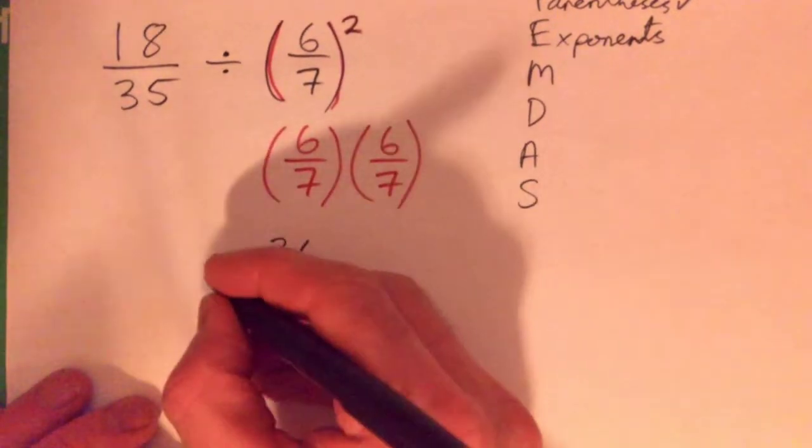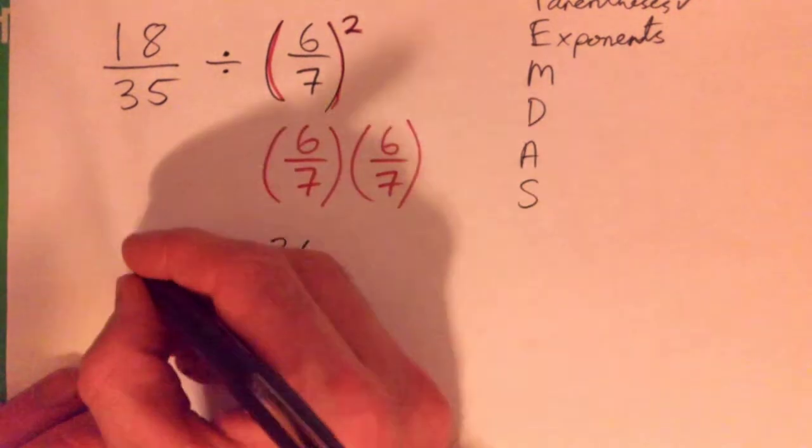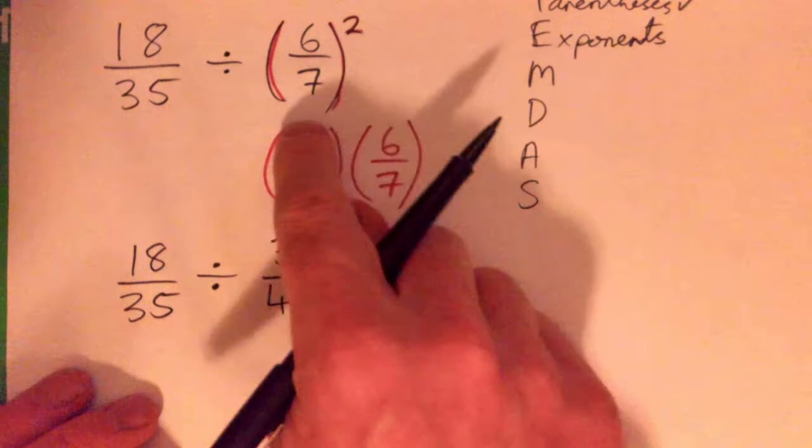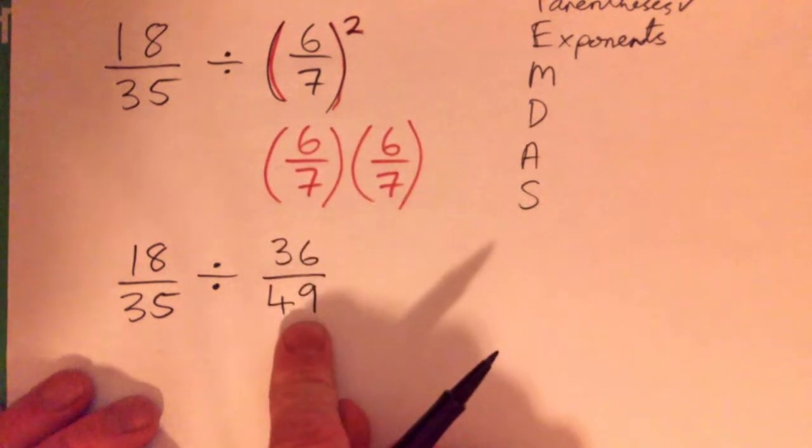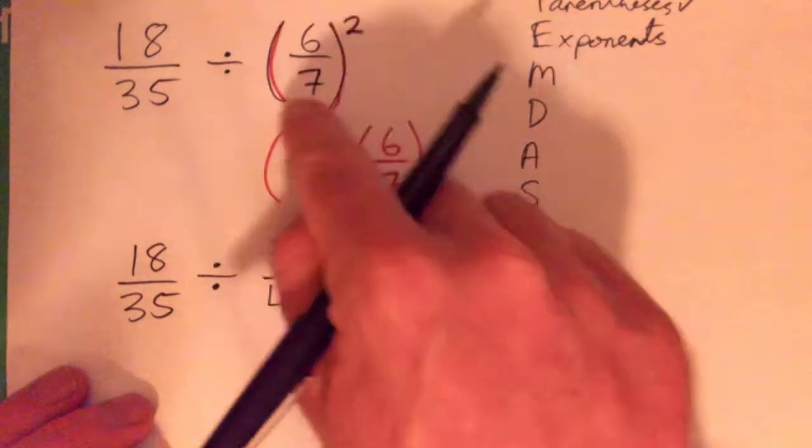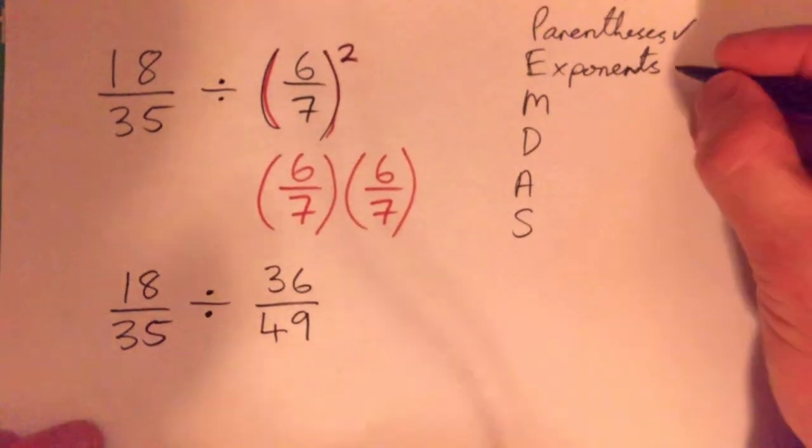Good, you've been practicing your mental arithmetic. So 18, 35. Yeah, multiplying fractions you multiply the tops then you multiply the bottoms. And so our squared has become squaring this becomes 36, 49ths, and so we can say that our exponents are done.